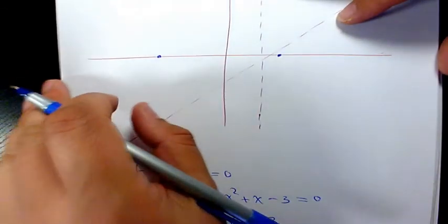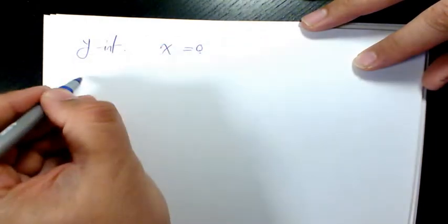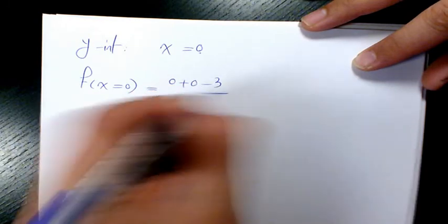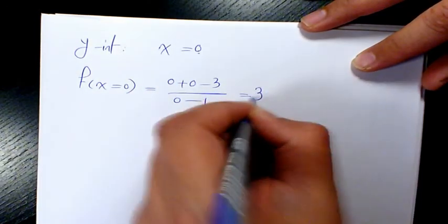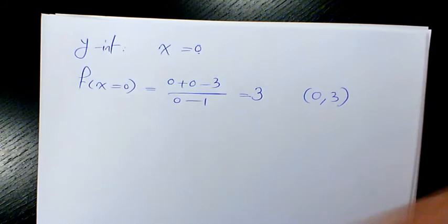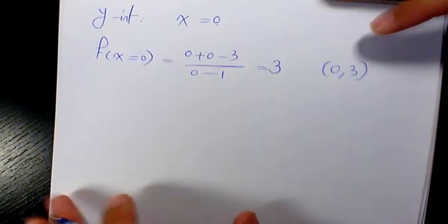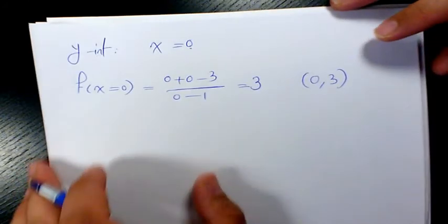For the y-intercept, set x = 0: f(0) = (0 + 0 − 3)/(0 − 1) = −3/−1 = 3. So the y-intercept is at (0, 3).